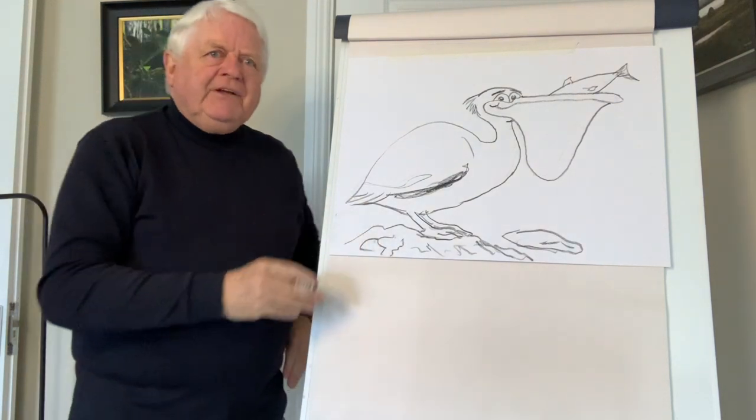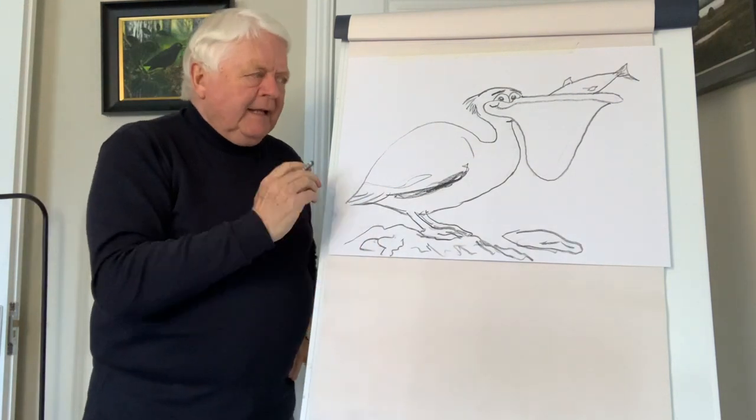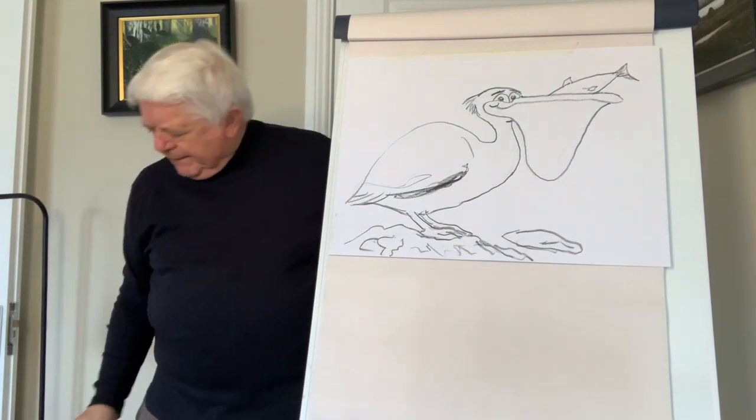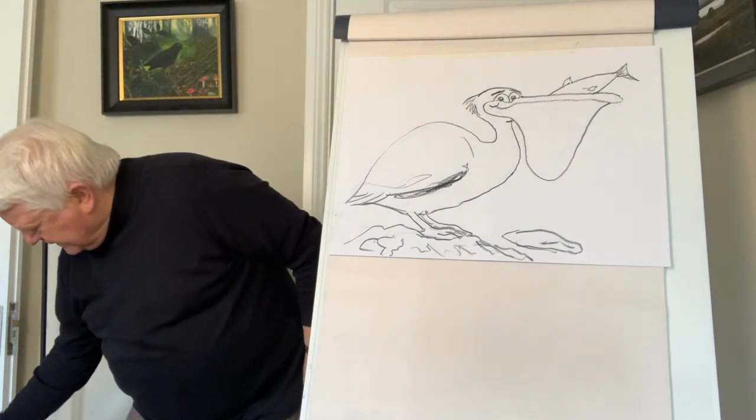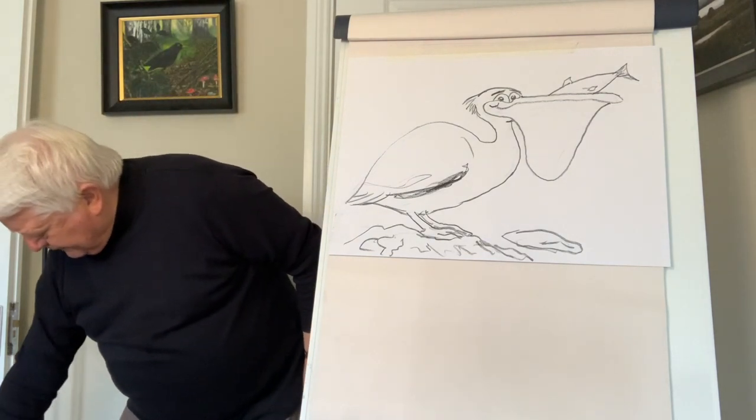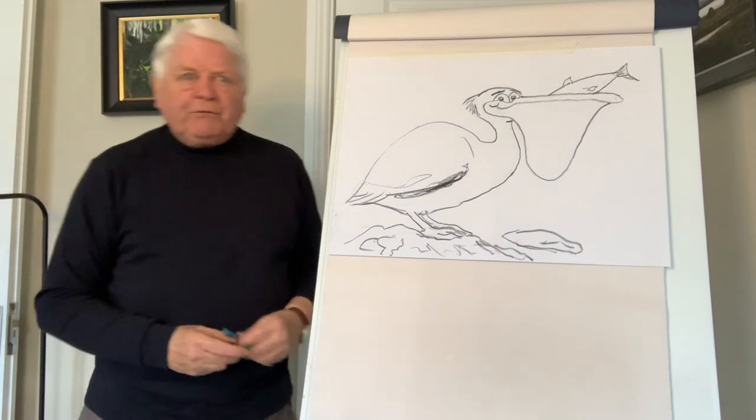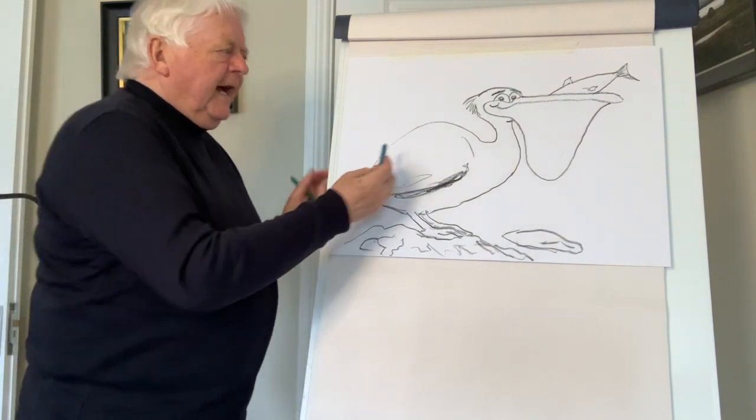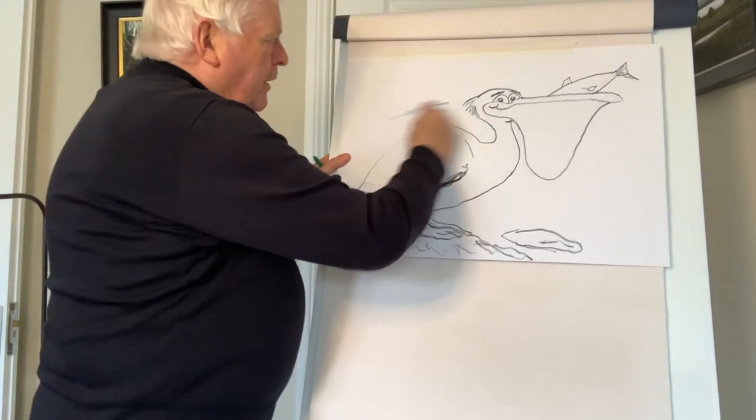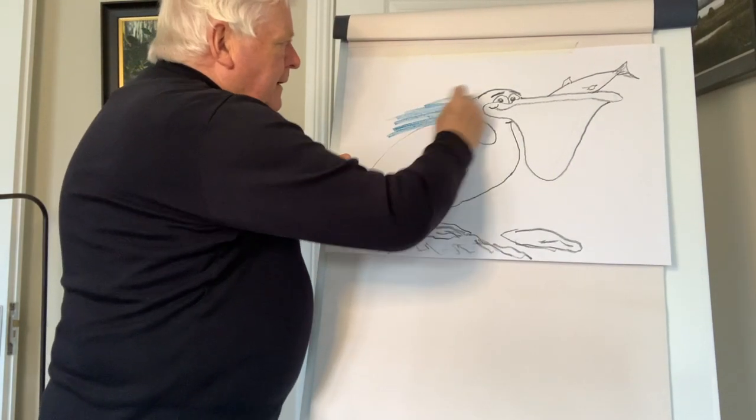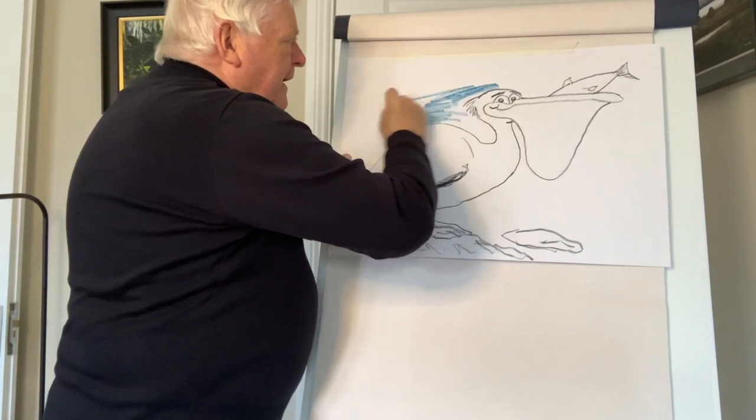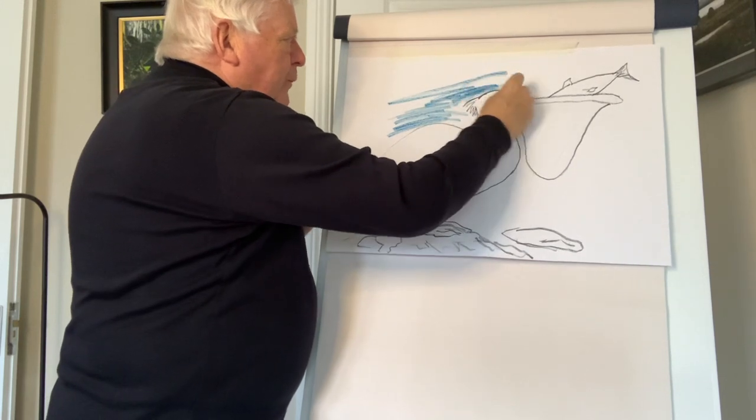So once you've done that and you're happy with the whole shape, then I'm very quickly going to put a little bit of color on it. Simply I'm just going to use a little bit of blue and green, and by putting some color like this it highlights the point very well.